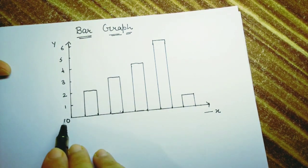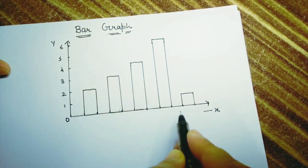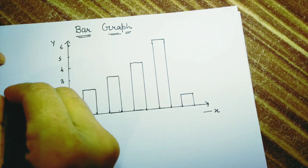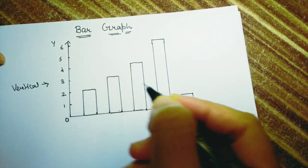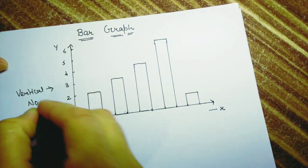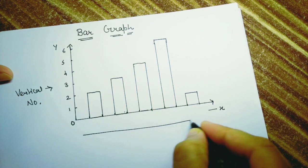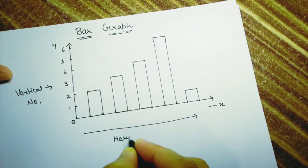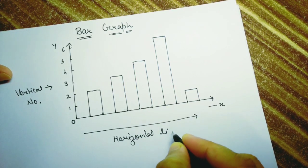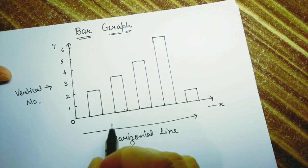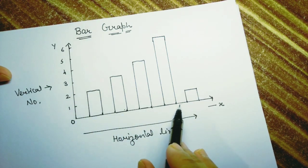In a bar graph there are two lines which are perpendicular to each other. One line is the vertical line, which shows the number, and the other line is the horizontal line, which represents the information that the bar graph is providing us.